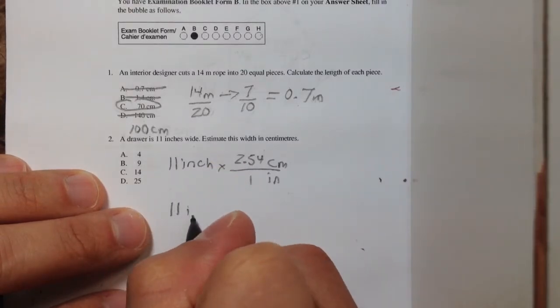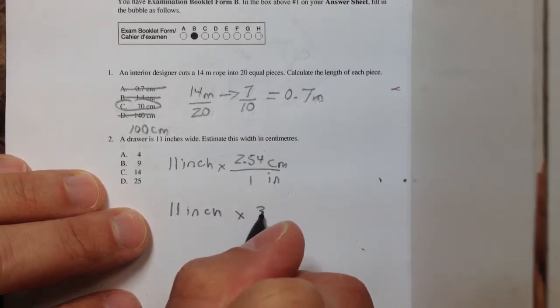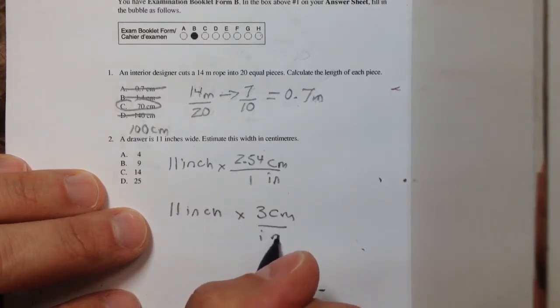Just do this. Just make it to the nearest centimeter. Let's say it's 3 centimeters per inch. So we know that approximately this drawer would be 33 centimeters wide.